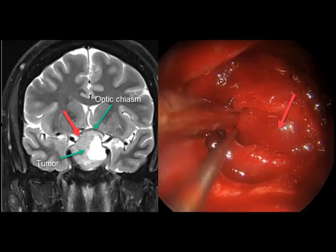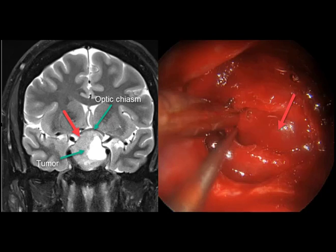Traditionally, there are two different endonasal approaches to pituitary tumors: one is using the microscope, and the other is using the endoscope. The endoscope is gaining popularity around the world because it allows for a less invasive approach and better visualization and light to the corners and crevices where there may be additional tumor, and I want to demonstrate that in this video.